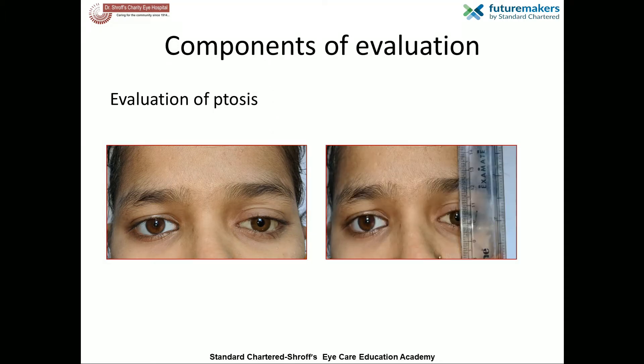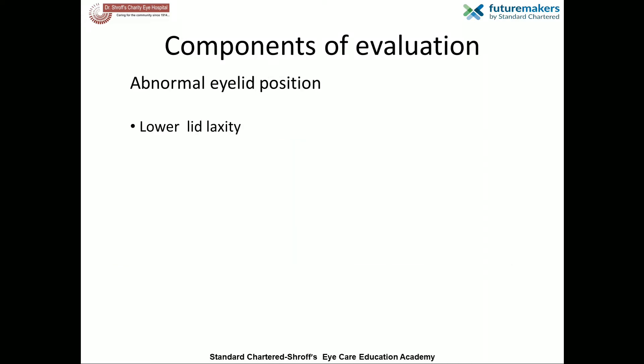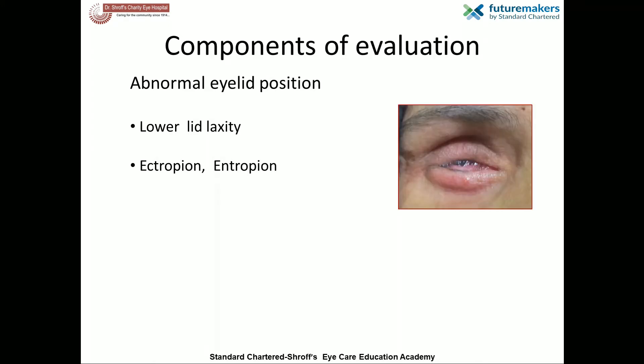Previous photographs taken before the occurrence of anophthalmia can be of great help. Presence of other eyelid abnormalities like lower lid laxity, ectropion, and entropion make retention of a prosthesis difficult. Presence of inturning of the eyelid secondary to posterior lamellar shortening indicates conjunctival shortening. The amount of lagophthalmos is measured with and without the prosthesis.